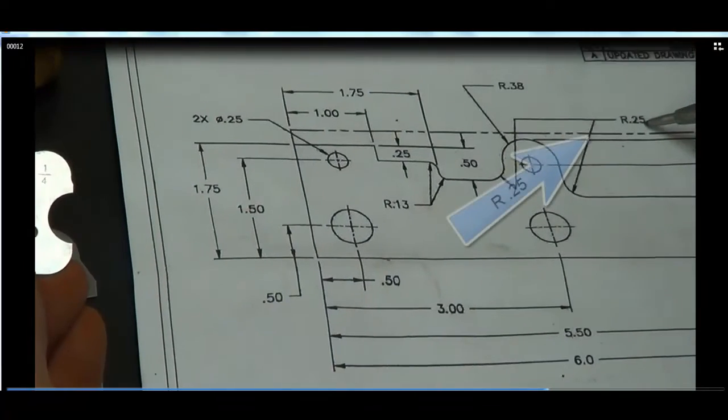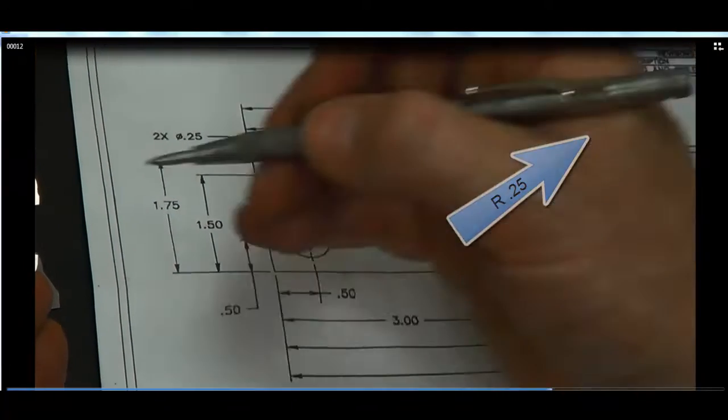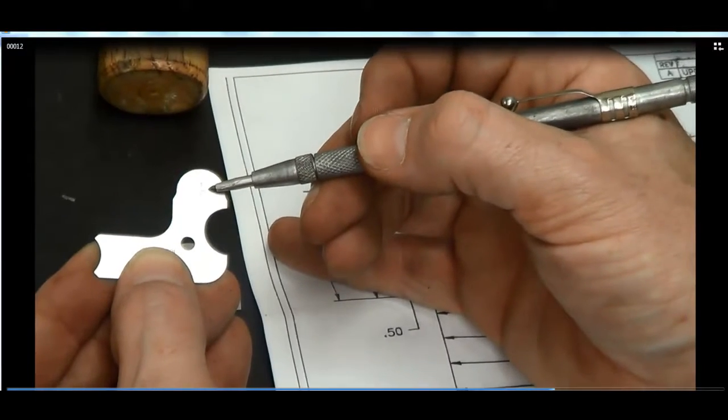0.25 is 250 thousandths of an inch which is a quarter of an inch, that's the fractional equivalent.